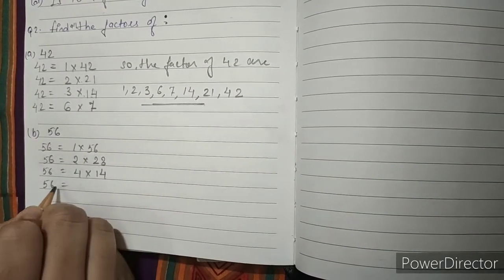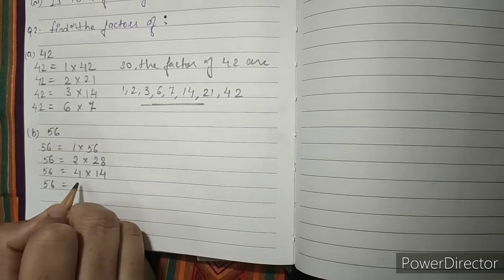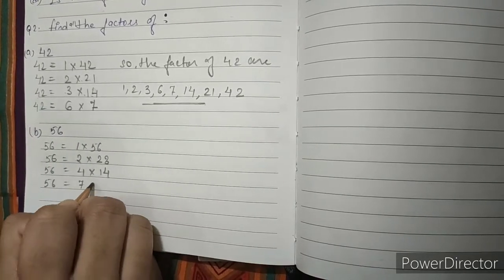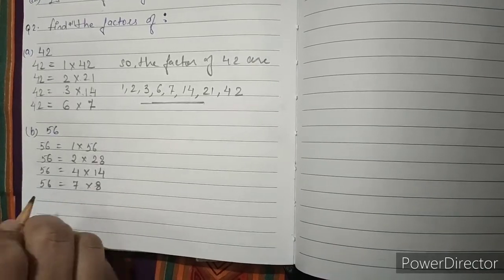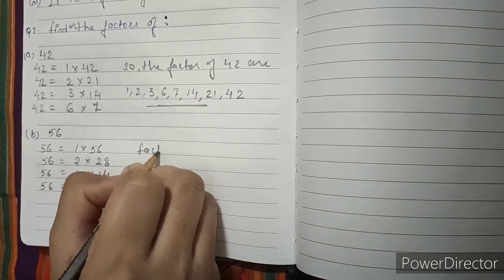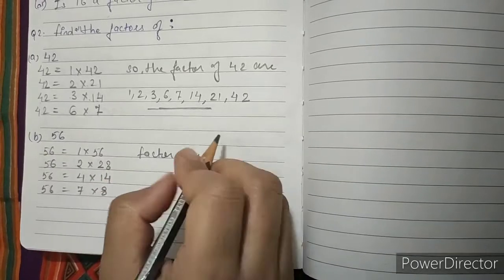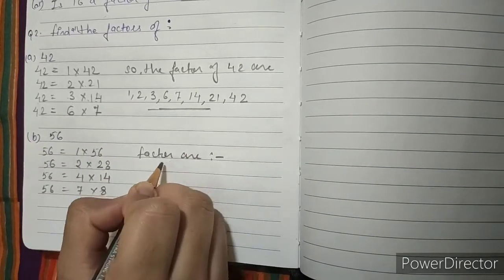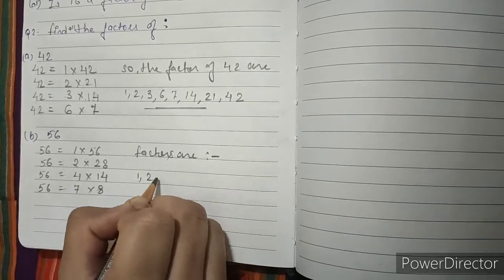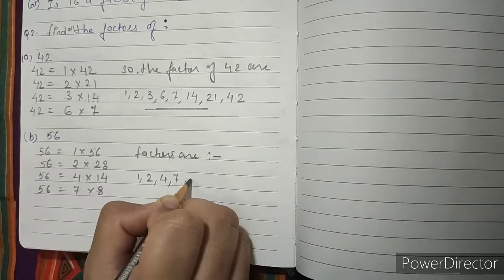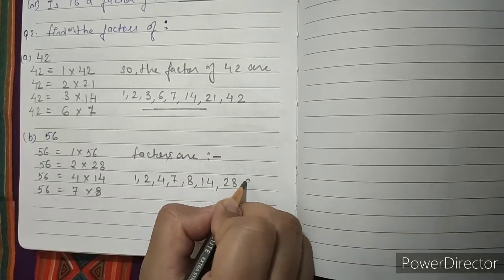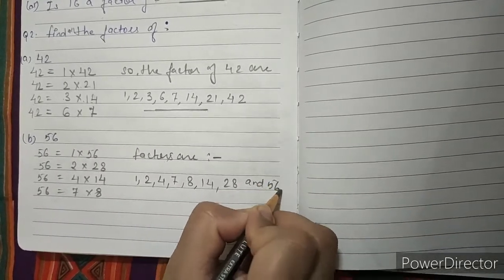56 is not divisible by 5 and 6. So we take 7: 7 eights are 56. So all the factors of 56 are 1, 2, 4, 7, 8, 14, 28 and 56.